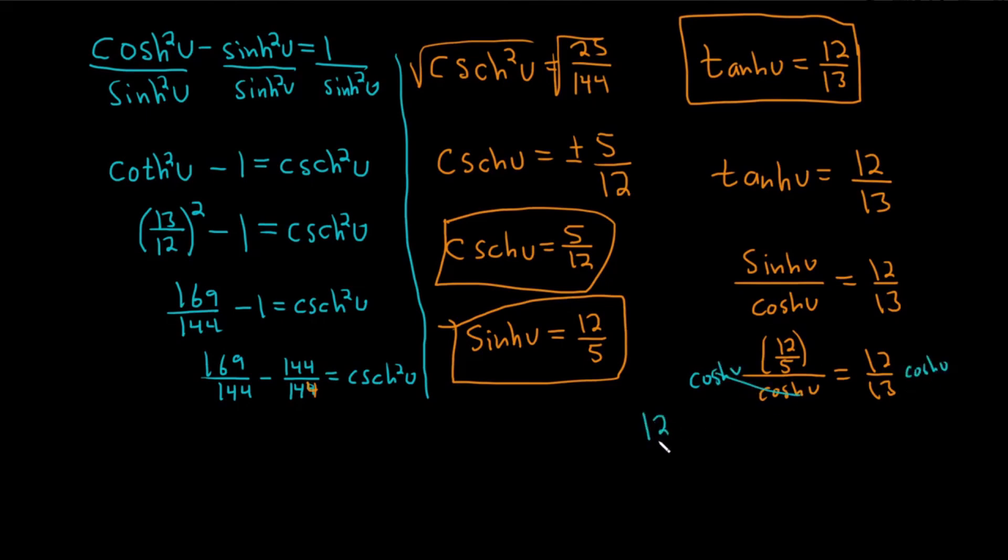Let's cancel. So we get 12 over 5 equals 12 over 13 hyperbolic cosine of u. And then to finish, we can multiply both sides by 13 over 12. So I'll put one here, and I don't know if I can squeeze it in here. 13 over 12. It's super tiny.